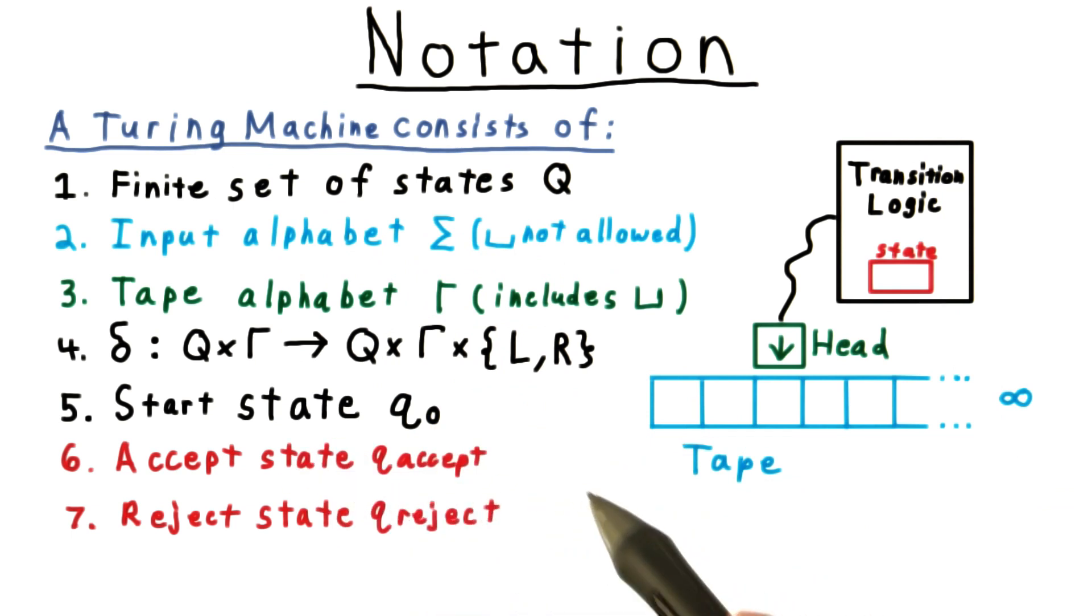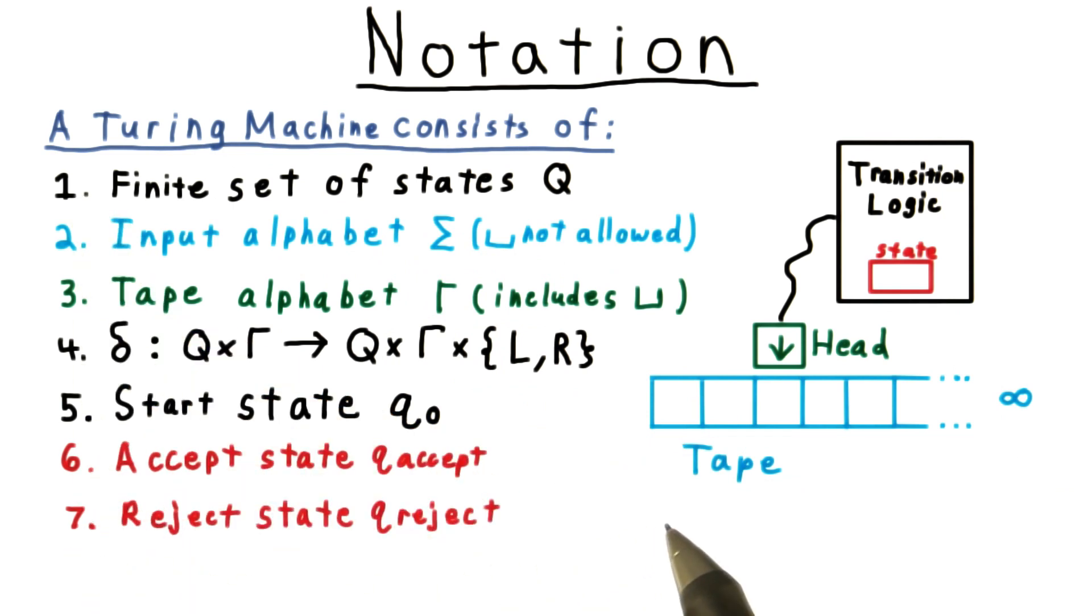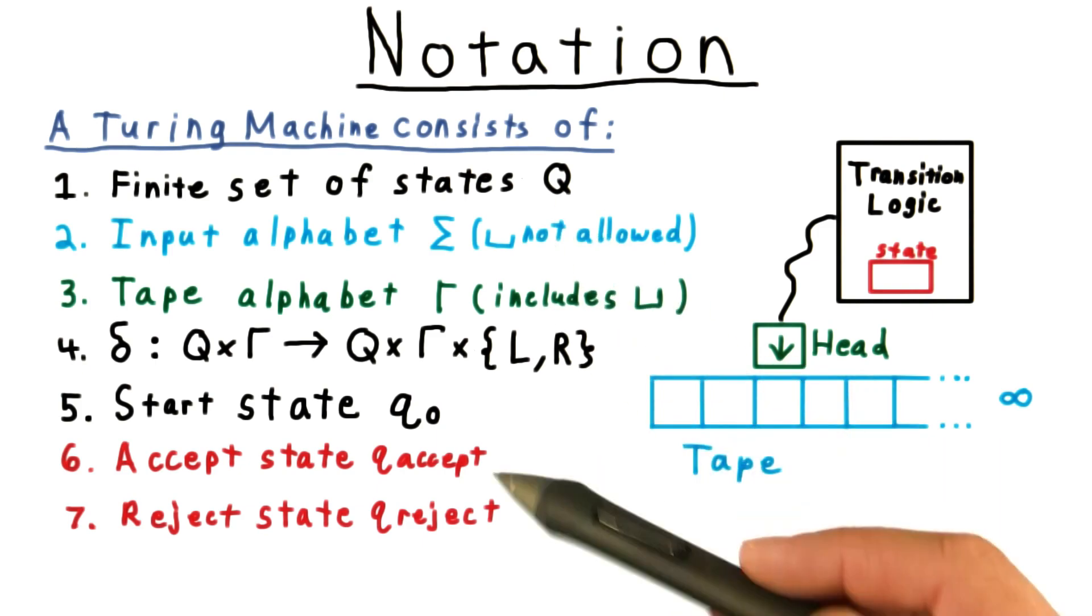At first, all this notation may seem overwhelming. It is a 7-tuple, after all. Remember, however, that all the machine ever does is respond to the current symbol it sees based on its current state. Thus, it's the transition function that is at the heart of the machine. And most all of the important information, like the set of states and the tape alphabet, is implicit in it.